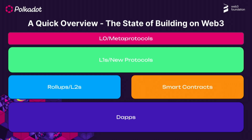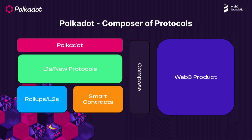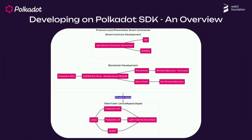Then you have layer ones, which are usually application-specific — sometimes generalized like EVM. On top of layer one you can build rollups and layer twos, smart contracts which act as middleware, and then dApps at the bottom. Polkadot you can think of as a composer of protocols — it allows you to grab different services, compose them into a single product, with trust assumptions already in place because they're secured and backed by Polkadot's economic security.